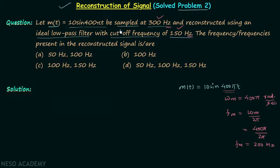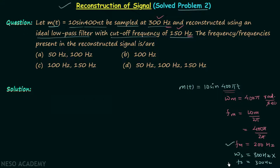The sampling of the message signal is performed at 300 Hz, so the sampling frequency fs is equal to 300 Hz. Don't write ωs equal to 300 Hz because that would be wrong — ωs has units of radians per second, not hertz. So fs equals 300 Hz. We have now obtained two important frequencies: fm and fs.